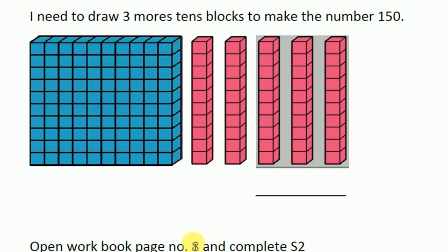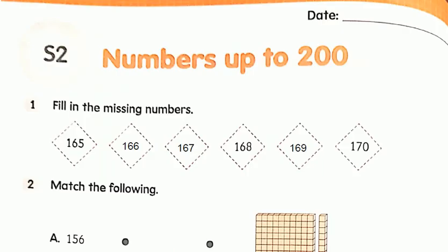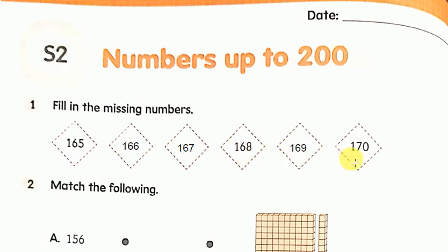Now let's move on to our workbook, page number 8, and complete S2 — Numbers up to 200. The first question is: fill in the missing numbers. So, 165 is our first number, count forward: 166, 167, 168, 169 and 170.